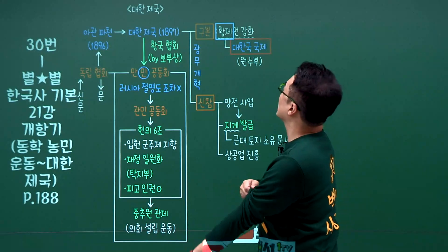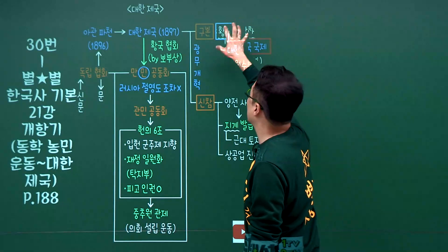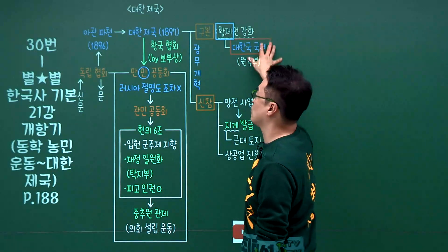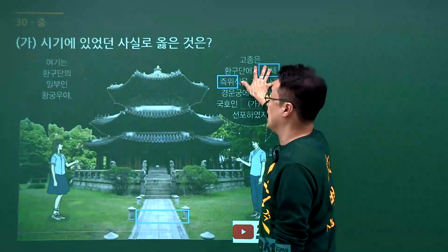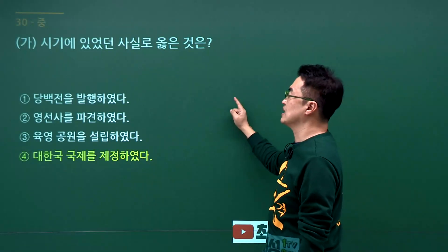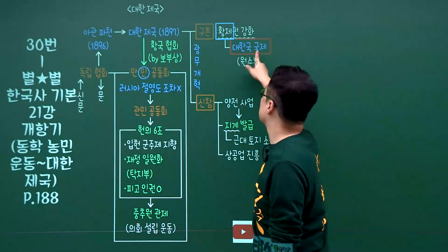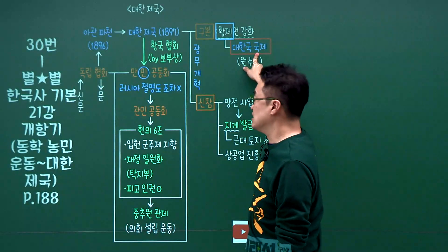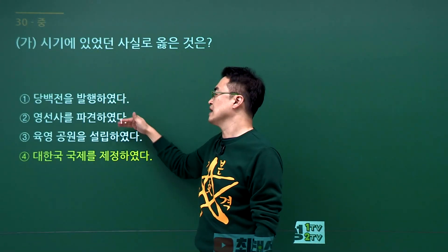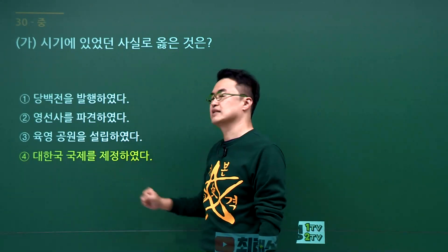대한제국 문제입니다. 대한제국의 광무개혁 내용으로 황제권의 강화와 대한국 국제를 만들었다는 내용을 배웠습니다. 문제에서 황제 즉위식이 나왔고 대한제국 시기에 있었던 사실은 대한국 국제입니다. 당백전, 영선사, 유길준은 모두 대한제국 이전에 있었던 것들입니다. 정답은 4번입니다.